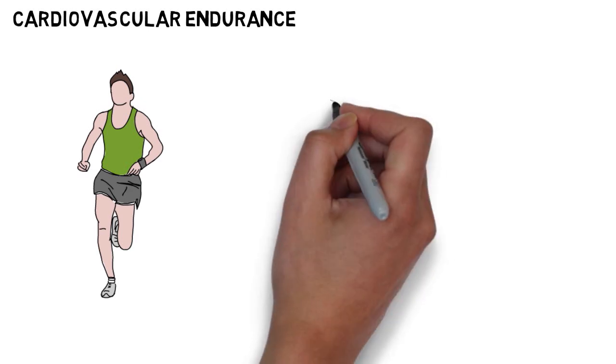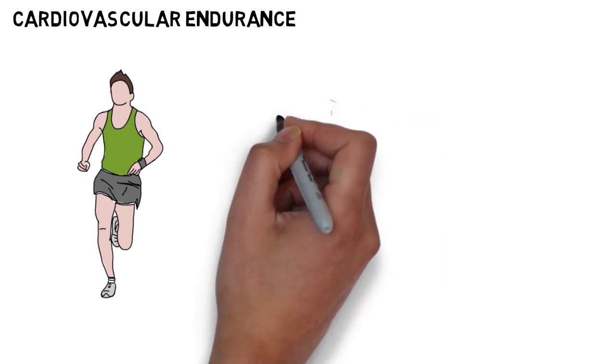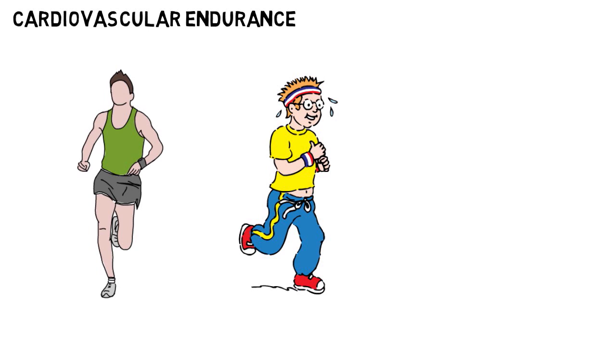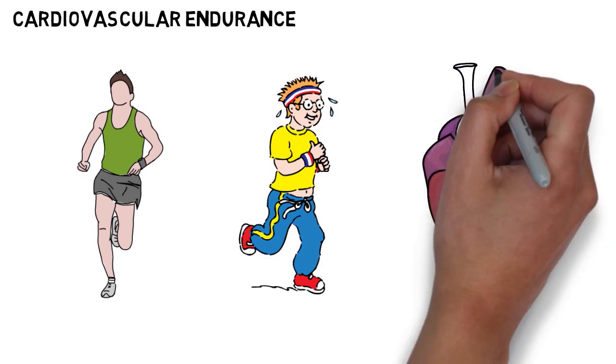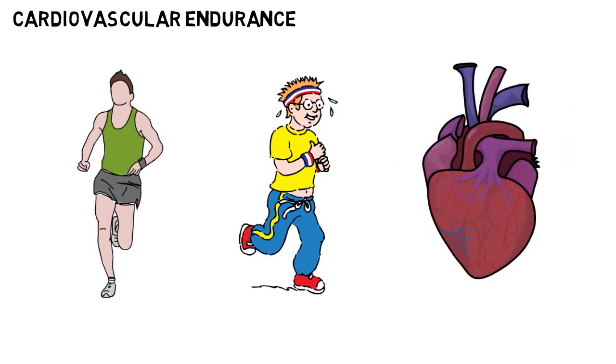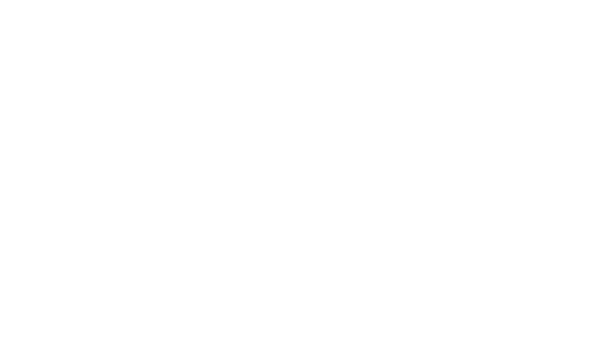The greater your cardiovascular endurance, the more efficient and able your cardiovascular system is at providing the muscles with oxygen. The more efficient this system is, the slower your heart rate will be at both resting and exercising rates.